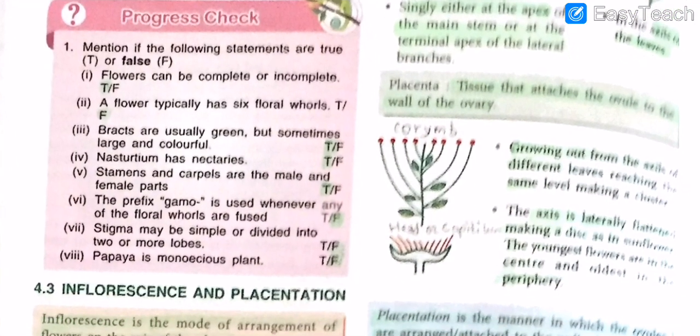Let's have a quick progress check — true or false: Flowers can be complete or incomplete — true. A flower typically has six whorls — false, it has four whorls. Bracts are usually green but sometimes large and colorful — true. Nasturtium has nectaries — true. Stamens and carpels are the male and female parts — true, stamen is male and carpel is female. The prefix 'gamo' is used whenever floral whorls are fused — false.